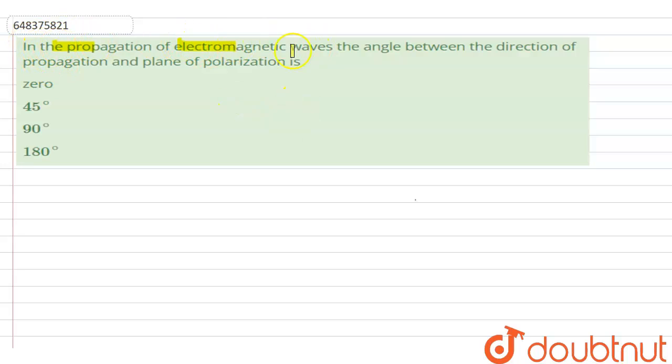In the propagation of electromagnetic waves, the angle between the direction of the propagation and plane of polarization is?